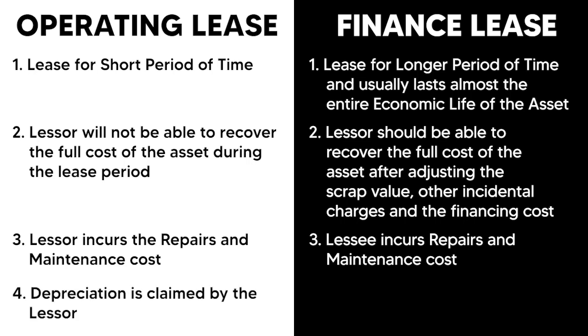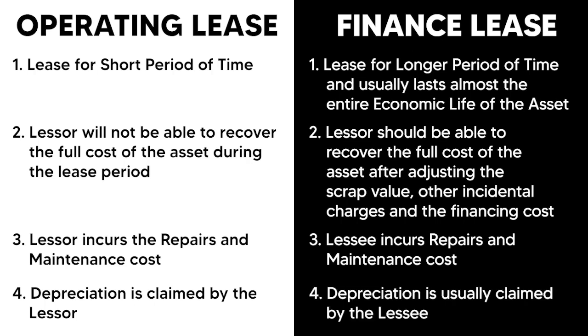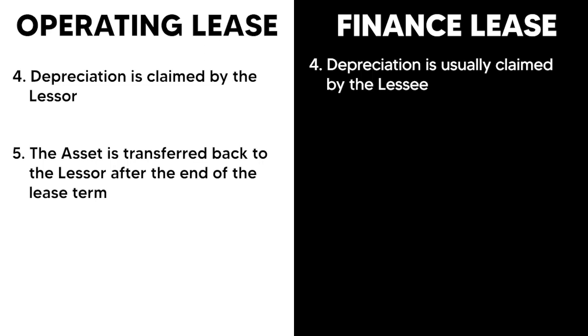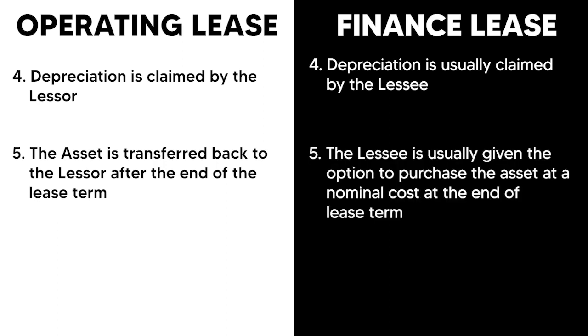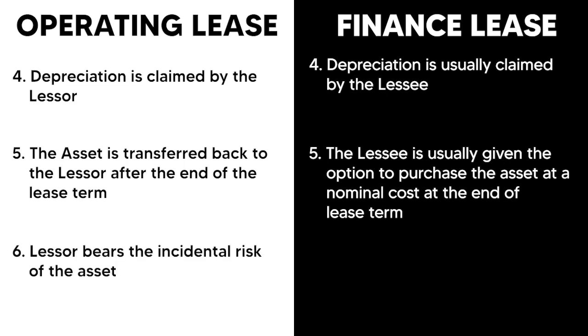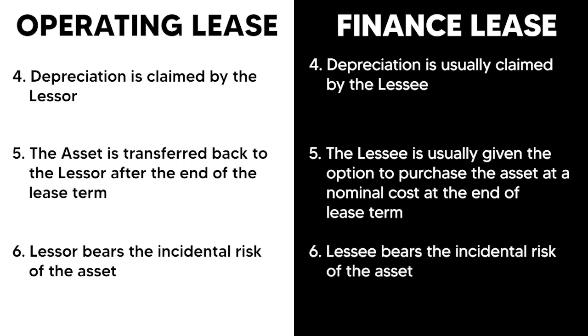In an operating lease, the depreciation on the asset is claimed by the lessor, whereas in a finance lease, it is usually claimed by the lessee. In an operating lease, the asset is transferred back to the lessor after the end of the lease term, whereas in a finance lease, the lessee is usually given the option to purchase the asset at a nominal cost at the end of the lease term. In an operating lease, the lessor bears the incidental risk of the asset, whereas in a finance lease, the lessee bears that risk.